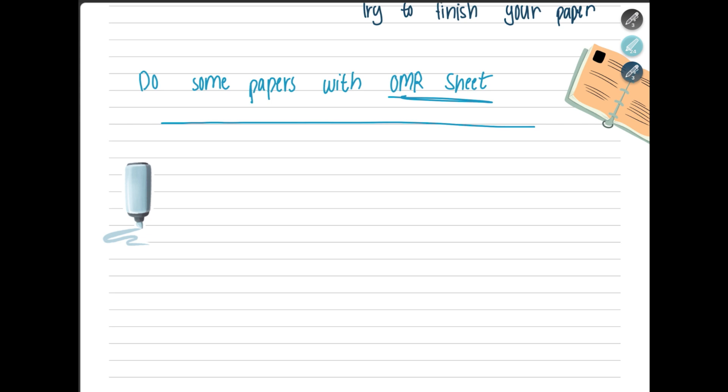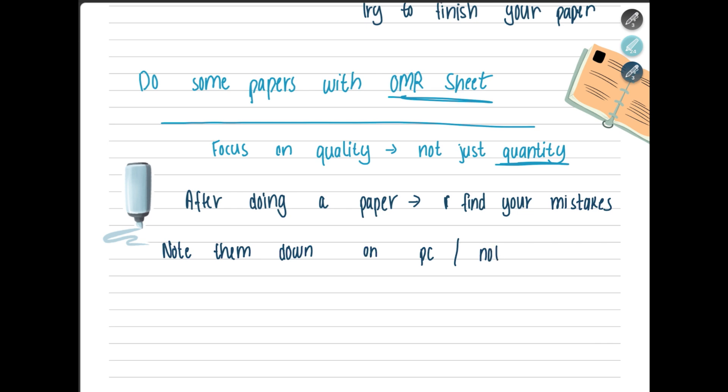Now I want to share some tips to improve your marks in paper 2. Remember to focus on quality, not just quantity. That means whenever you are doing a paper, check it with the marking scheme and find your mistakes. Note down your mistakes, either take a screenshot or write them in a notebook and learn them, so that when you are doing that paper again, you don't repeat them and you don't lose the same marks again.